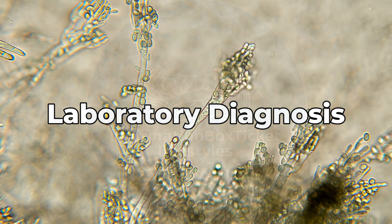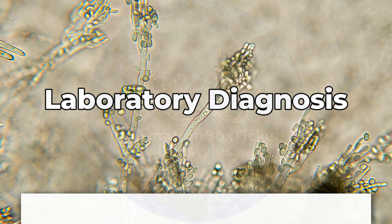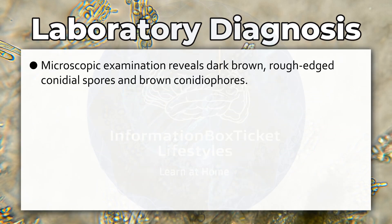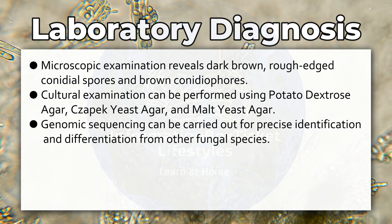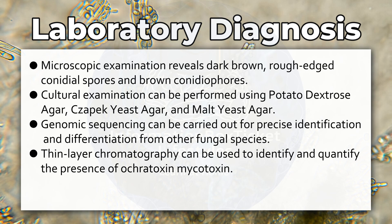Laboratory Diagnosis of Aspergillus niger. Microscopic examination reveals dark brown, rough-edged conidial spores and brown conidiophores. Cultural examination can be performed using potato dextrose agar, Czapek yeast agar, and malt yeast agar. Genomic sequencing can be carried out for precise identification and differentiation from other fungal species. Thin-layer chromatography can be used to identify and quantify the presence of ochratoxin mycotoxin.